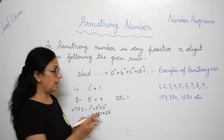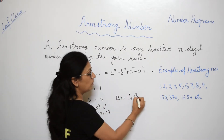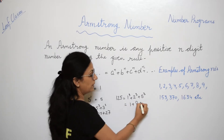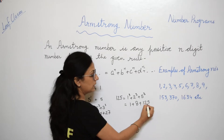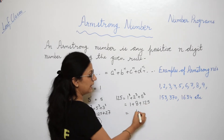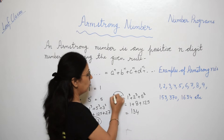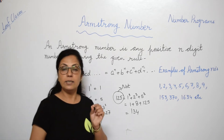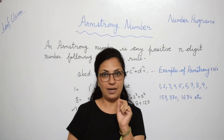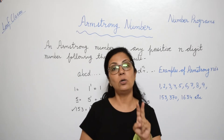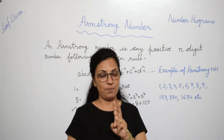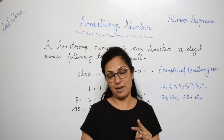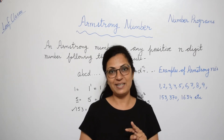Now let me take a counter-example: 125. It also has three digits, so 1³ + 2³ + 5³ = 1 + 8 + 125 = 134. Since 134 is not equal to 125, the number 125 is not an Armstrong number. One interesting fact: there is no two-digit Armstrong number. We don't have any two-digit number that satisfies this property — if you find one, let me know in the comments!